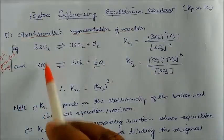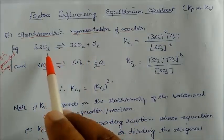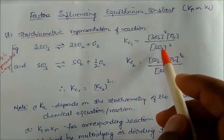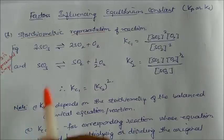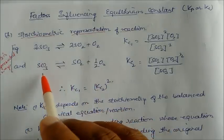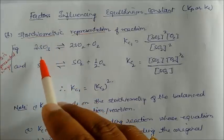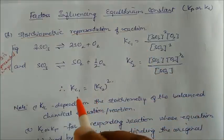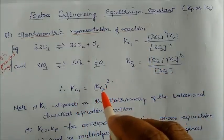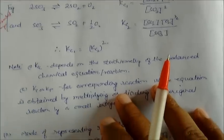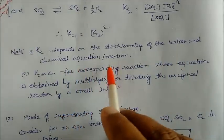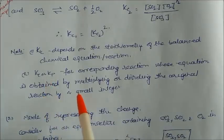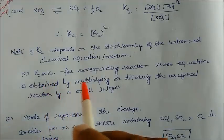Consider the reversible reaction involving SO3 and SO2. We can write the Kc using the law of chemical equilibrium. If you divide the SO3 equation by 2, the stoichiometric coefficients change. Writing Kc for this new reaction and comparing, Kc1 is equal to Kc squared. So Kc depends on the stoichiometry of the balanced chemical equation — if you divide, it becomes a square.